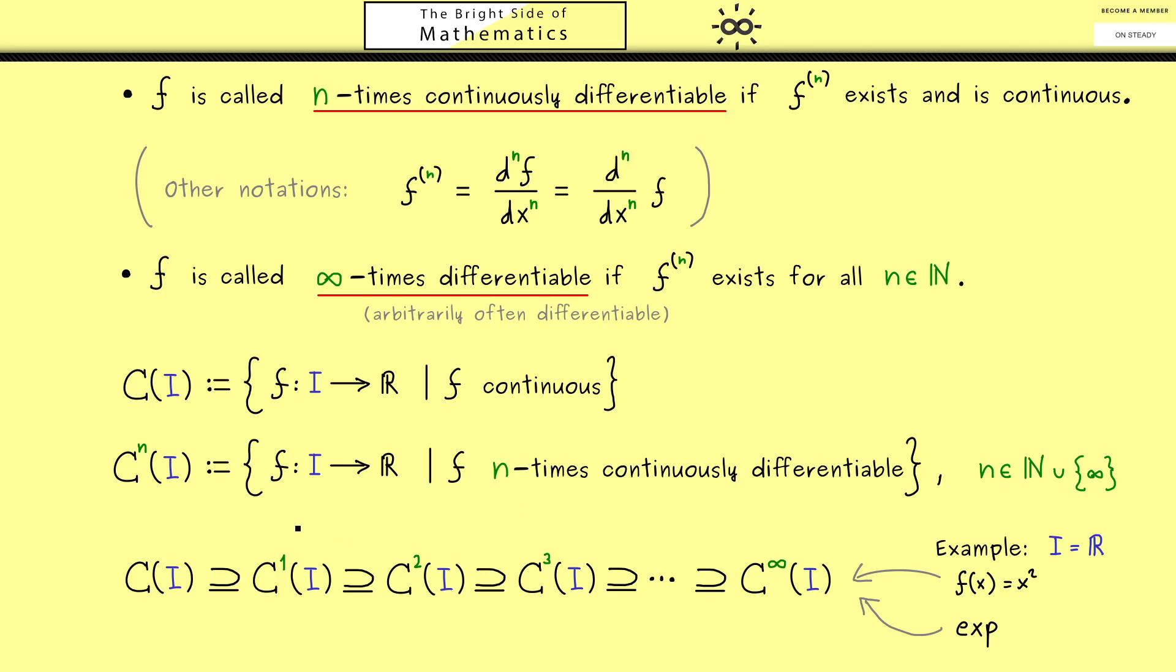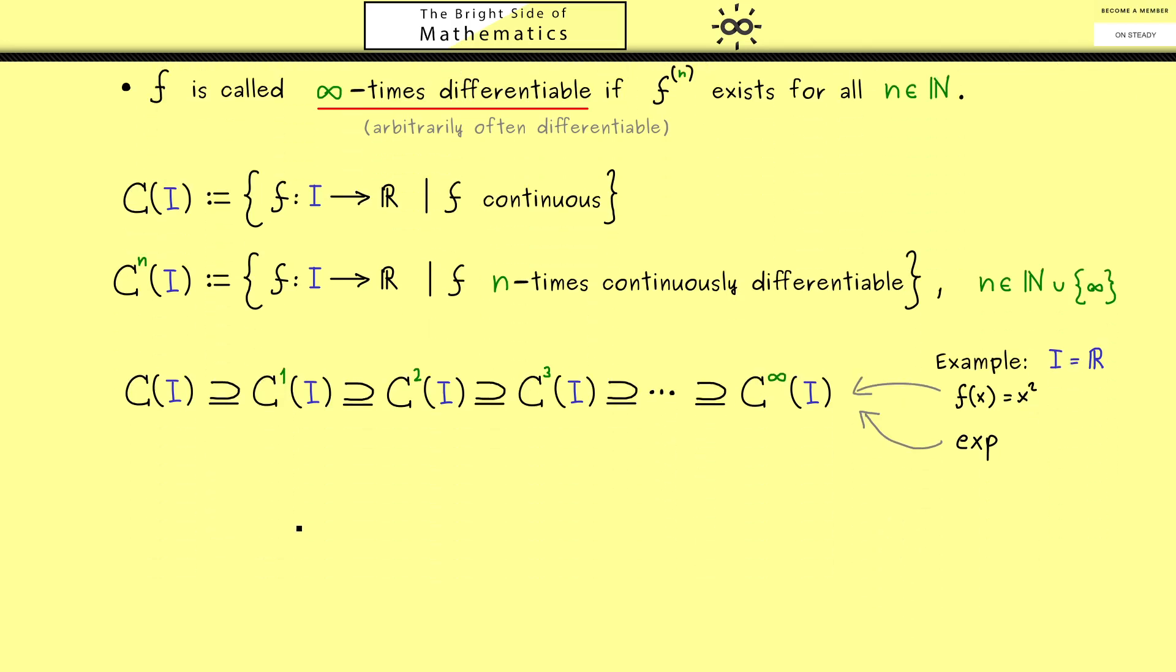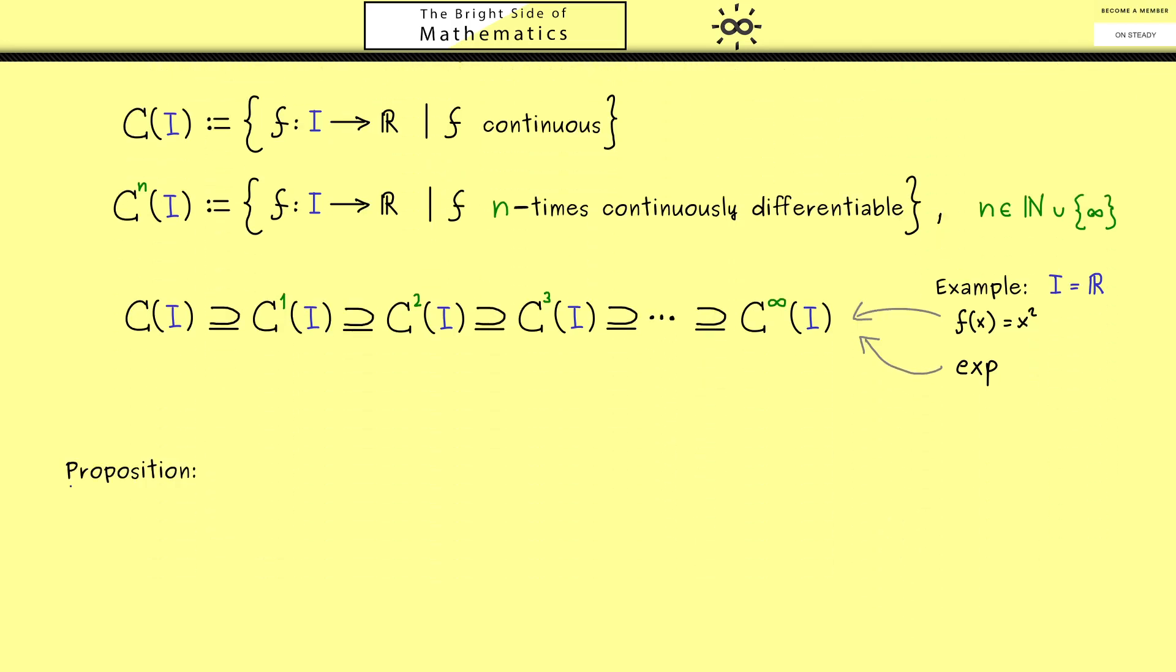Then let me show you how we can use the higher derivatives with the next proposition. This is something you might have already applied but now I also want to prove it here. The claim is that for function f defined on an interval we find a sufficient condition for a local maximum and minimum. We already know for a differentiable function we have a necessary condition for having a local maximum or minimum at an inner point of the interval.